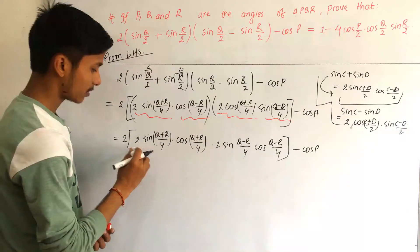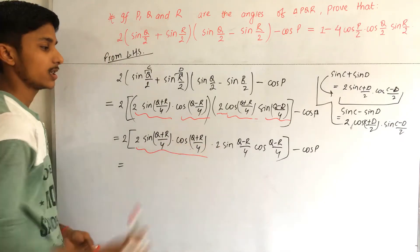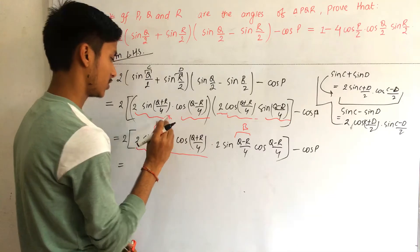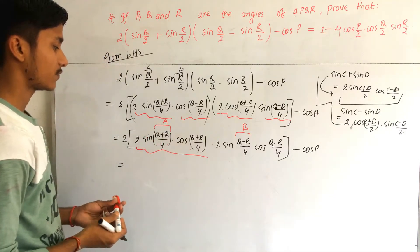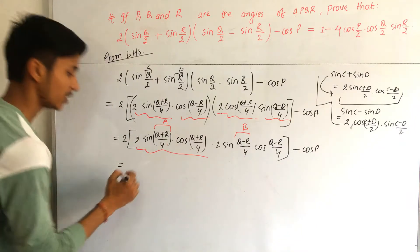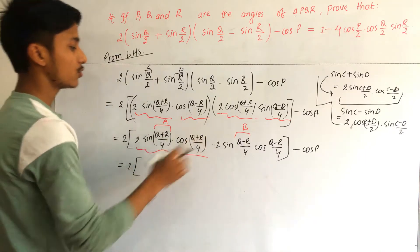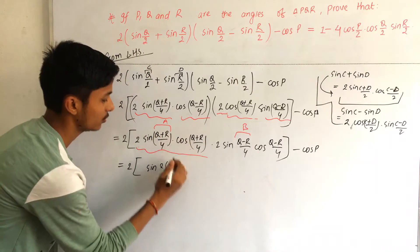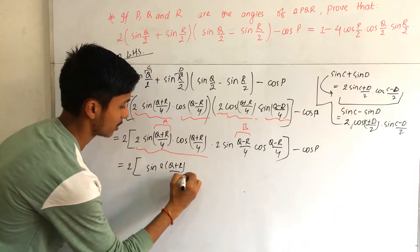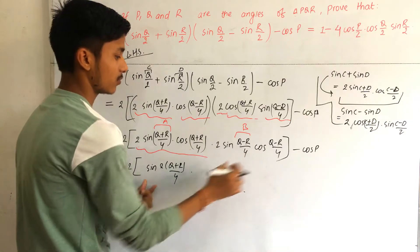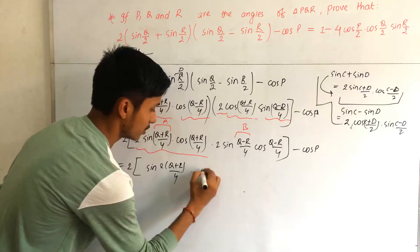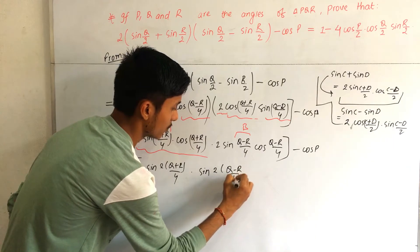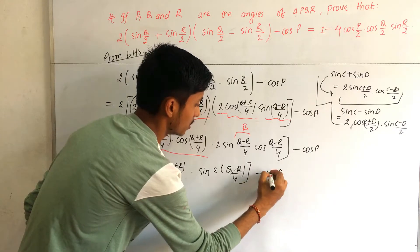Now you can see this is in the form of 2·sin A·cos A = sin 2A. Considering sin((Q+R)/4) and cos((Q+R)/4) as the A terms, and the other pair as B terms, we apply this formula. We write sin(2·(Q+R)/4) = sin((Q+R)/2), and similarly 2·sin((Q-R)/4)·cos((Q-R)/4) = sin((Q-R)/2), minus cos P.